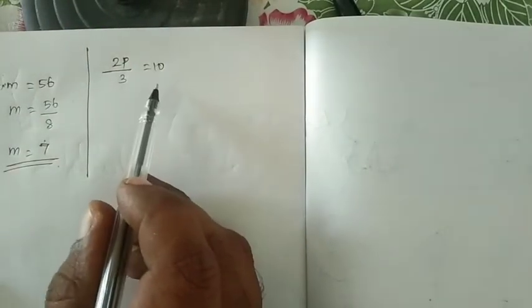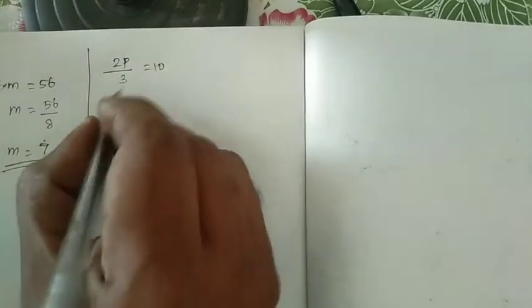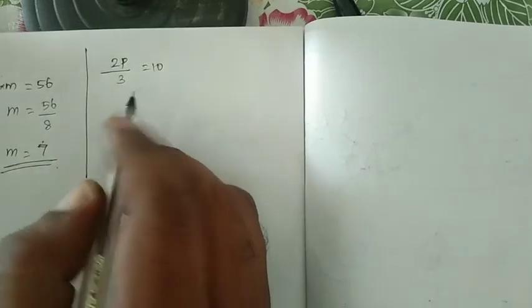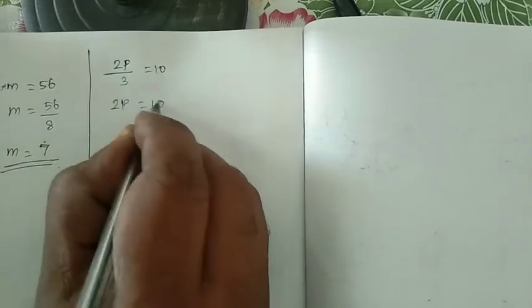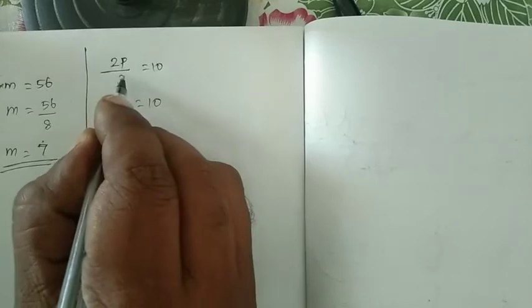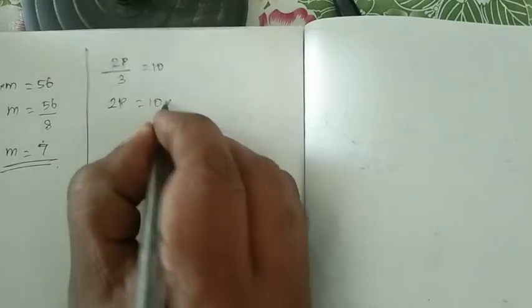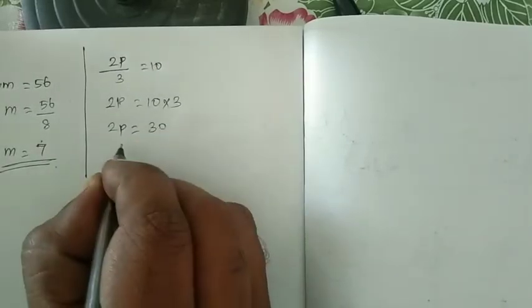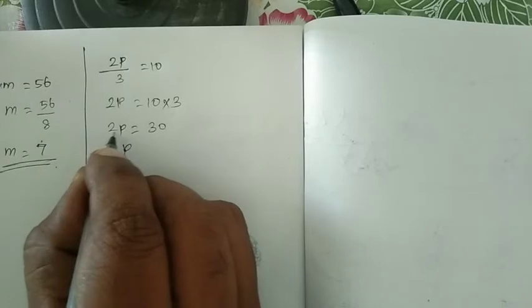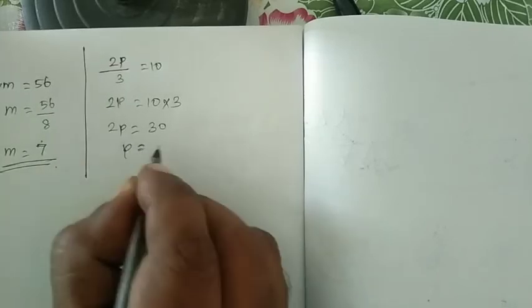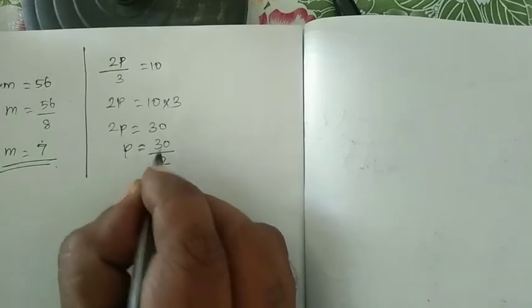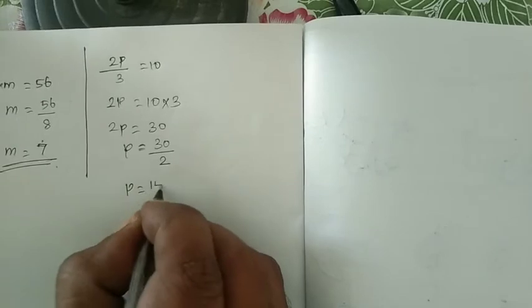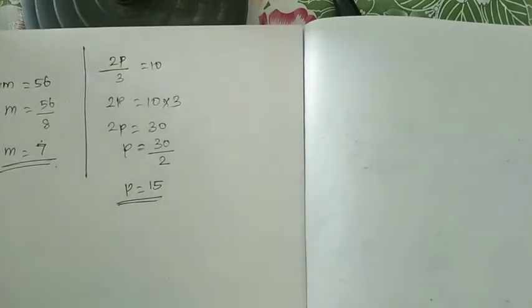2p by 3 is equal to 10. So p is equal to 5. 2p is equal to 30. Now p is equal to 10. So p is equal to 30 by 3, p is equal to 15. Answer is 15.